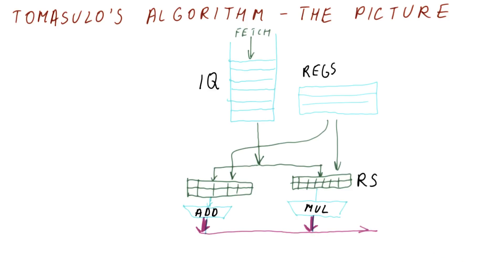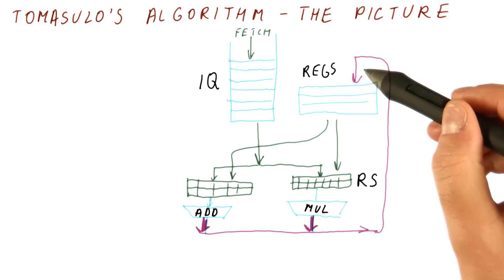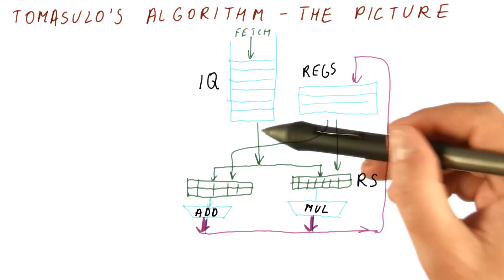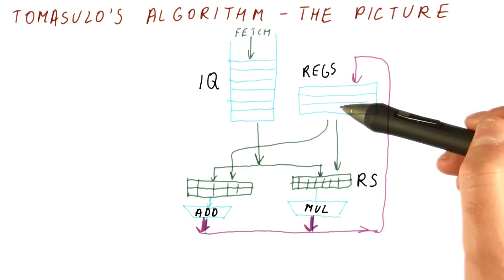Once such a unit has produced a result, the result will be broadcast on a bus. Of course, the result would go to the register file. Pretty much all the results that are ready would be available in the register file, so that instructions that come in would simply grab them from there, and we don't have to worry about where those values are going to come from.